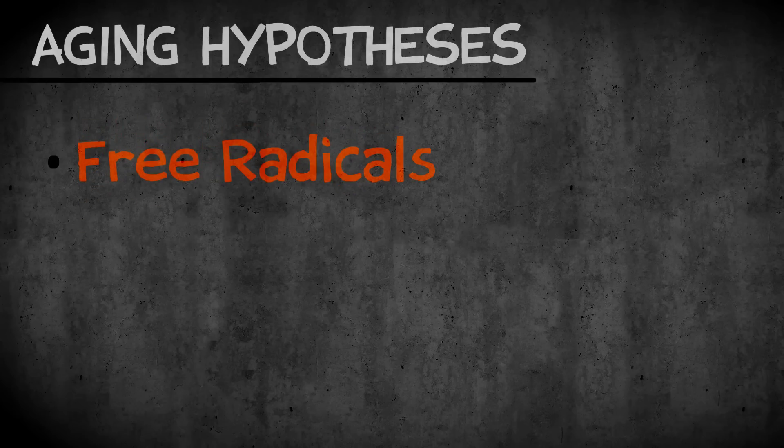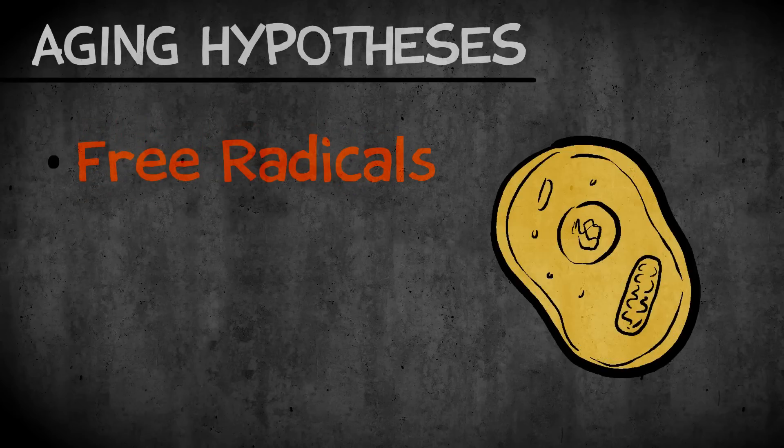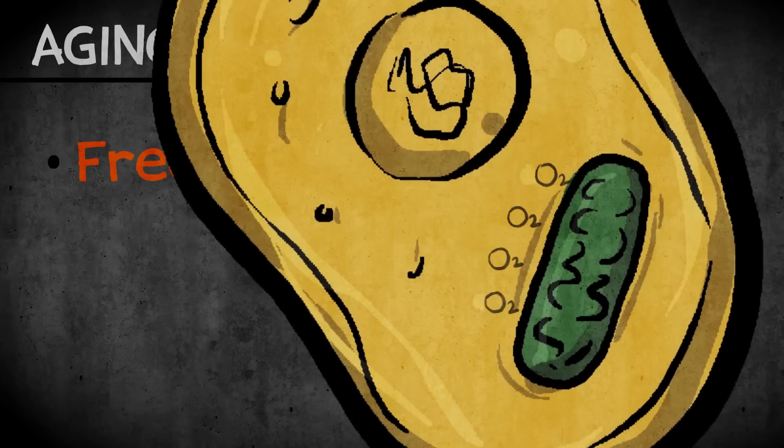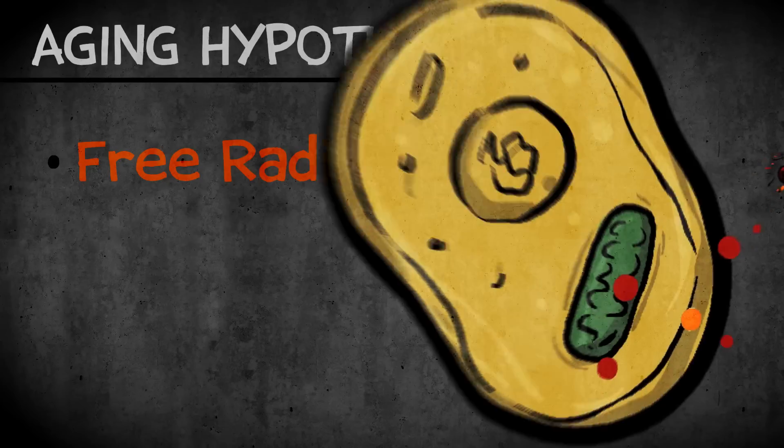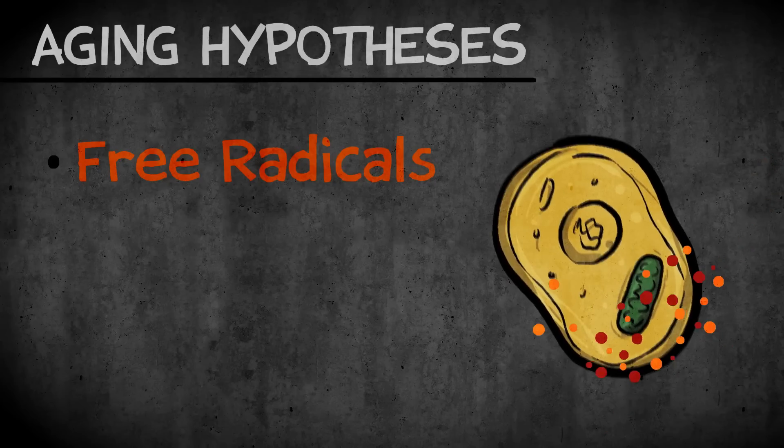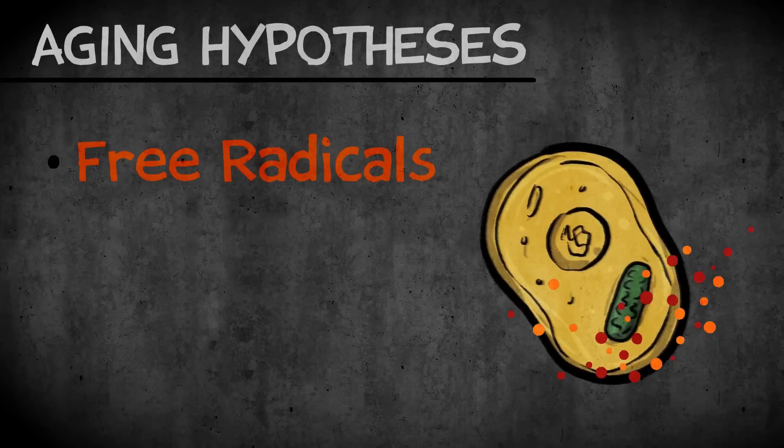Then there's the free radical theory of aging. This idea that as mitochondria in our cells, as they burn energy with oxygen, it generates these very highly reactive compounds, which creates damaging oxidative stress, which in turn accumulates with age, and that's the cause of aging.